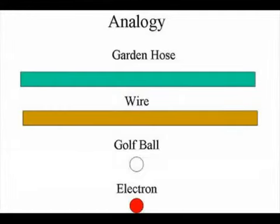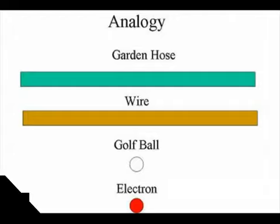To explain these three things, we're going to use an analogy. We have a garden hose that's going to represent our piece of wire, and a small golf ball to represent the electron.